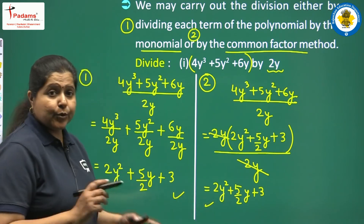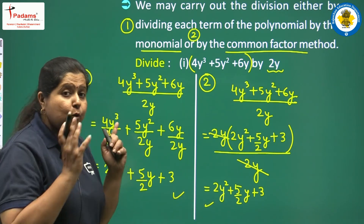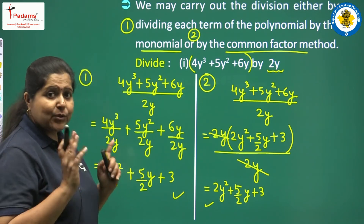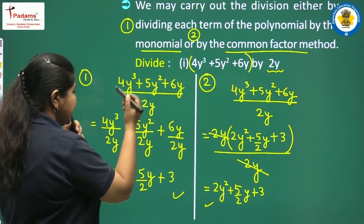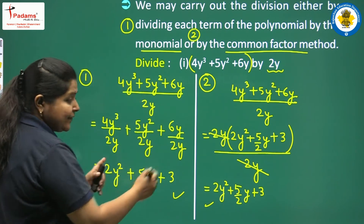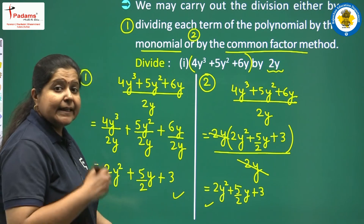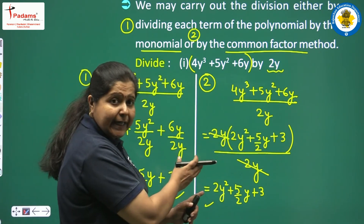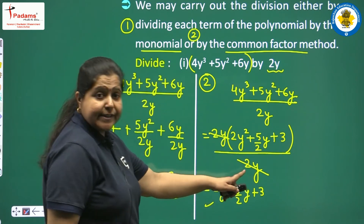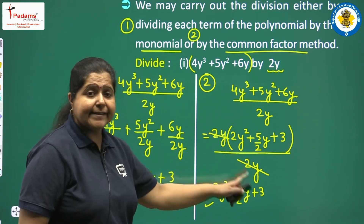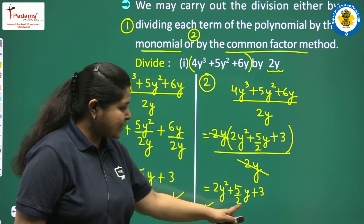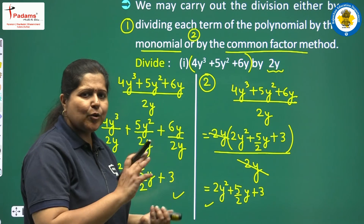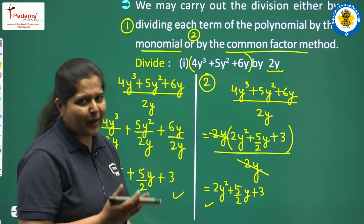The two answers are the same. When dividing a polynomial by a monomial, you can either divide each term of the polynomial by the monomial separately, or take out the common factor from the polynomial and then cancel. Both methods are valid — use whichever you find easier.